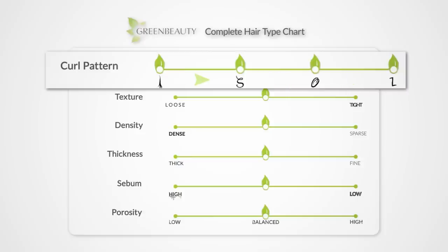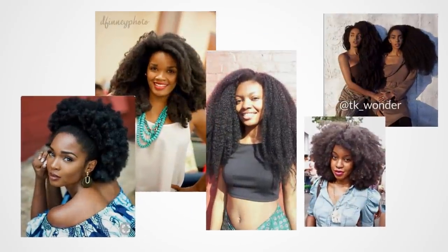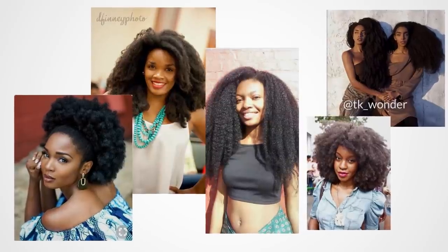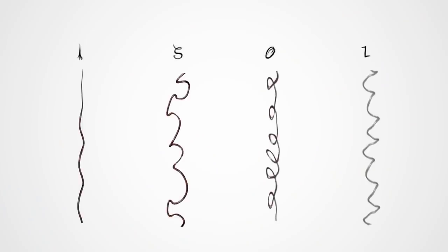It's trickier to keep an O or L curl pattern free from excessive tangles and knots compared to an I and S curl pattern. There's less room for error, but the rewards are out of this world. Hopefully now you have a better idea of what your curl pattern combination is and what it means.